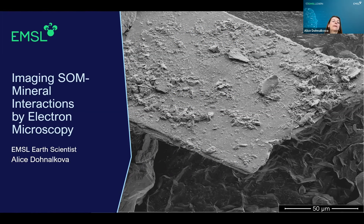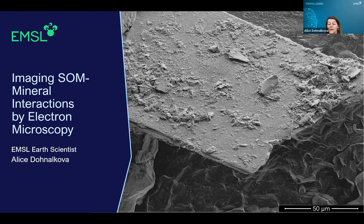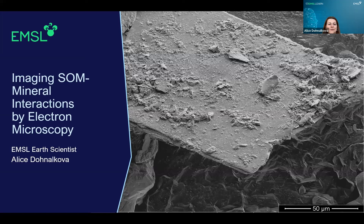Today I'll be talking about imaging soil organic matter and mineral interactions by electron microscopy. The illustration here is actually a mineral with organic matter on it. I'd like to point out the scale bar here — electron microscopy is certainly not a bulk method. It takes advantage of spatial resolution, and we are talking about microns and nanometers.